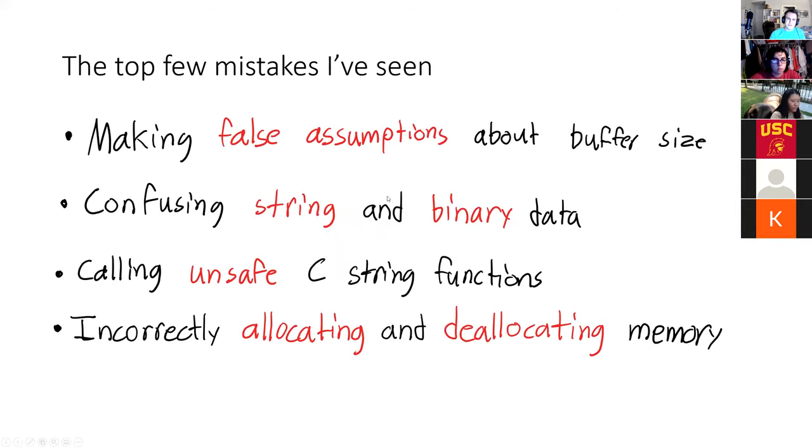There's a couple of mistakes that really tend to happen very commonly with C strings. One of the biggest ones is false assumptions about buffer size, like accidentally not realizing how big a buffer is, or not making your buffer big enough. There's confusing string and binary data, really easy to do when they have the exact same variable type. Calling unsafe C string functions, always a thing to watch out for. And finally, incorrectly allocating and deallocating memory. That is always a major worry.